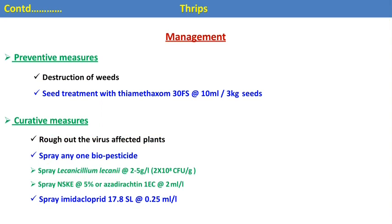For managing thrips in sunflower: destruction of weeds, since weeds act as alternate hosts for thrips. Seed treatment with thiamethoxam at 10 ml per 3 kg of seeds is effective against all sucking pests. Blue sticky traps can be used for mechanical control. Rogue out virus-affected plants from infested fields. Spray biopesticide Lecanicillium lecanii, effective against sucking pests. Botanical insecticides like 5% neem seed kernel extract and azadirachtin can also be sprayed. Imidacloprid is the recommended chemical insecticide against thrips.